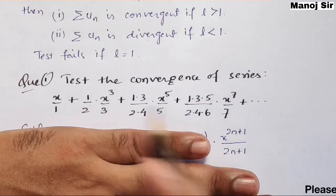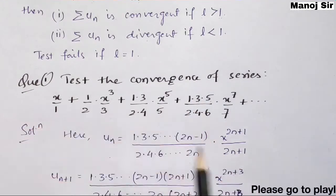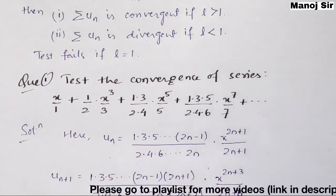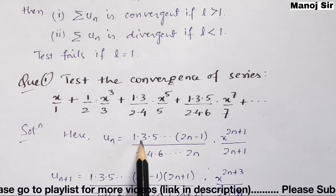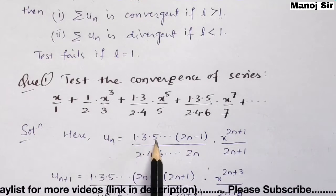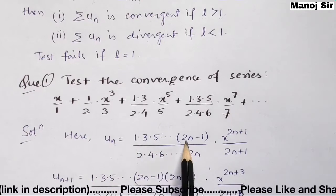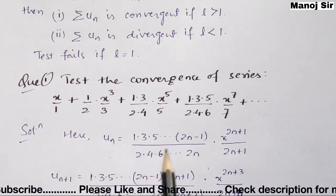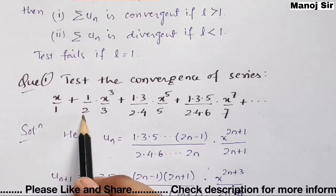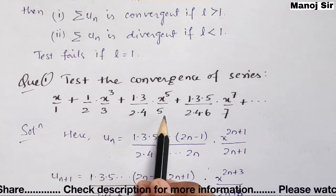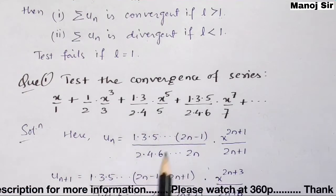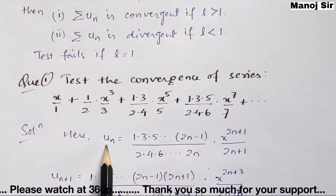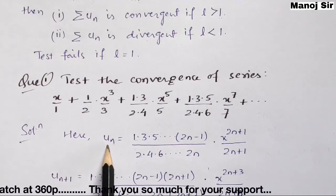So the nth term un is: [1·3·5·...·(2n−1)] / [2·4·6·...·(2n)] times x^(2n+1) / (2n+1).